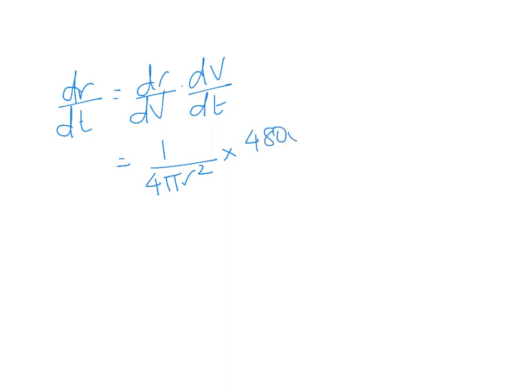Now what I'm going to do is pop those two factors together. We've got dr by dt equals dr by dv times dv by dt, and that was equal to 1 over 4 pi r squared times 4,800, which equals 1,200 over pi r squared.